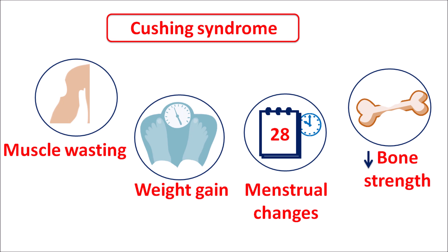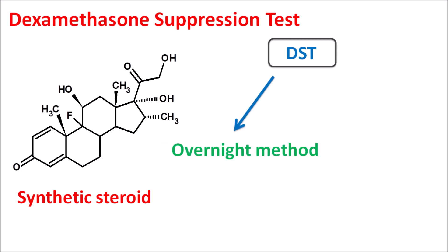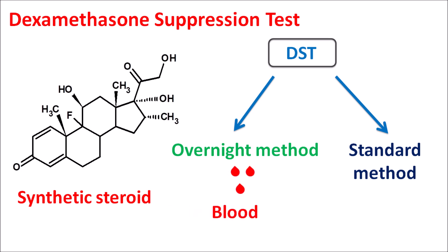To identify Cushing syndrome we can use the dexamethasone suppression test, or DST. In this test we use a compound called dexamethasone, which is a synthetic steroid. The overnight method involves giving dexamethasone at night and collecting a blood sample the next morning. Alternatively, the standard method gives the drug at equal intervals for 48 hours and estimates cortisol using a urine sample. Because of its convenience, the overnight method is more preferred.